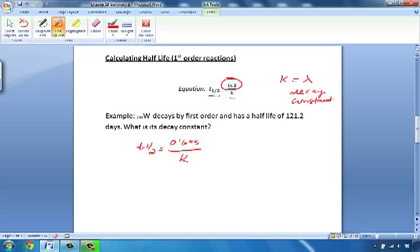So let's take a look at this example where we have tungsten-188 that is decaying by first order and has a half-life of 121.2 days. And we want to know what the decay constant is.